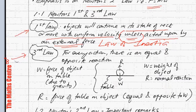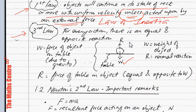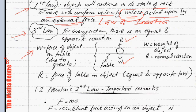Let's talk about Newton's third law using a simple example. We have an object of weight W resting on a table. If you indicate the forces acting on the object, you will have the weight of the object acting downwards and the normal reaction. W, the weight of the object, is the force of the object on the table due to gravitational pull. R here is the force of the table on the object.